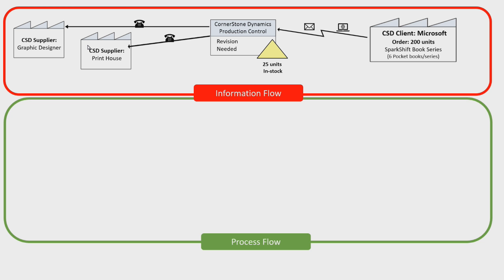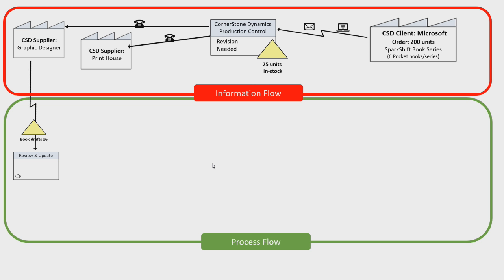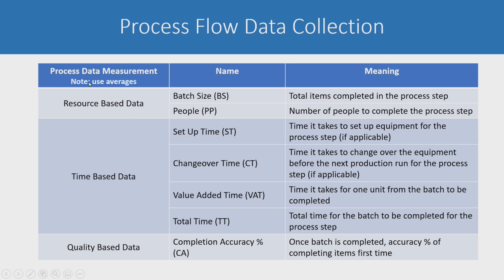Now that we have the information flow, we go into the process flow because there's a physicality of actually fulfilling this order. The graphic designer sends us the drafts in a Word document, which goes to our first process step: review and update. Before capturing all the process steps, we need to decide what data we're going to collect. There are three areas people really look at: resource-based data, time-based data, and quality-based data.